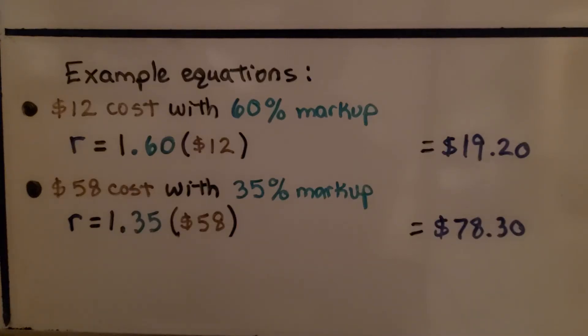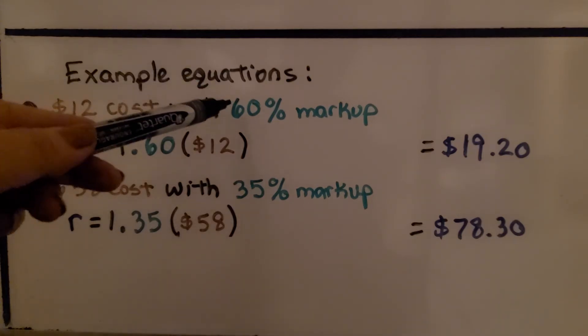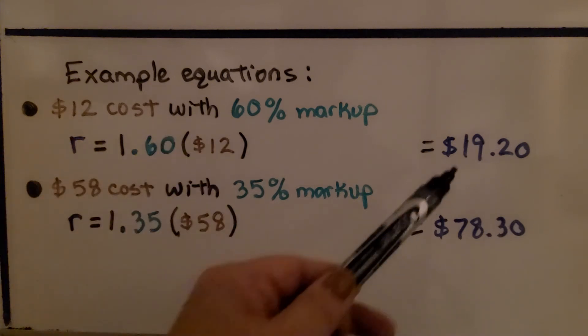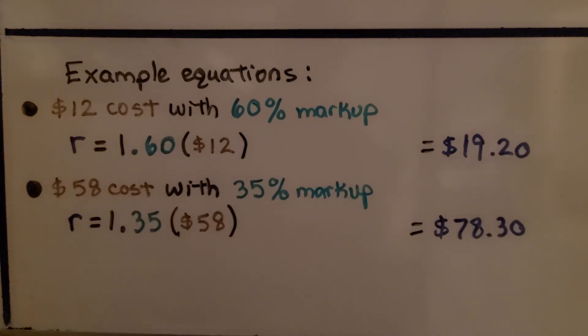Here are some example equations. If you've got an item from the manufacturer for $12 cost and want a 60% markup, the retail price R equals 1.60 times $12, which equals $19.20. If we have an item for $58 with a 35% markup, R equals 1.35 multiplied by $58.